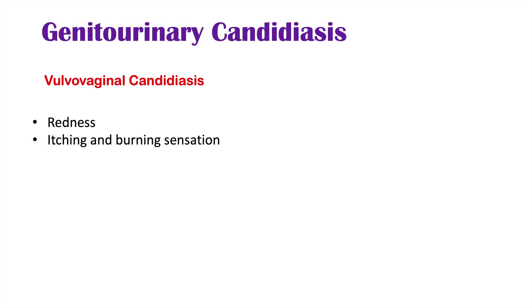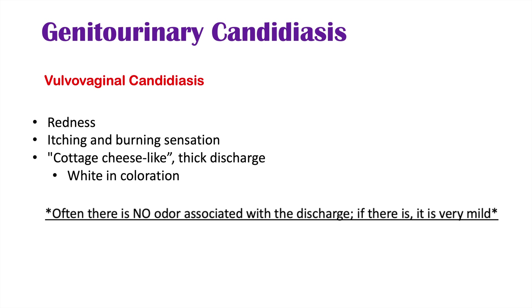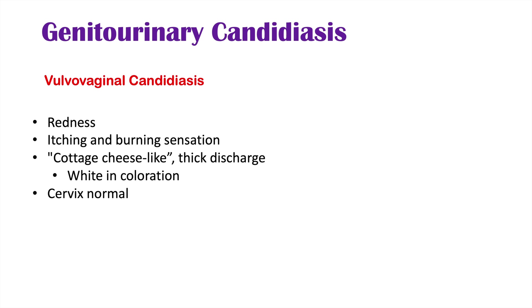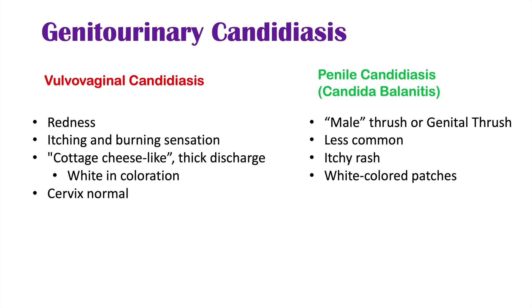Genitourinary candidiasis includes two types. Vulvovaginal candidiasis, or vaginal yeast infection, presents with redness of the vagina or labia, itching and burning, and a characteristic thick white cottage cheese-like discharge. On speculum examination, the cervix is normal. Males can also get yeast infections — called penile candidiasis or candida balanitis, also known as male thrush or genital thrush. It presents with an itchy rash and white colored patches on the penis.